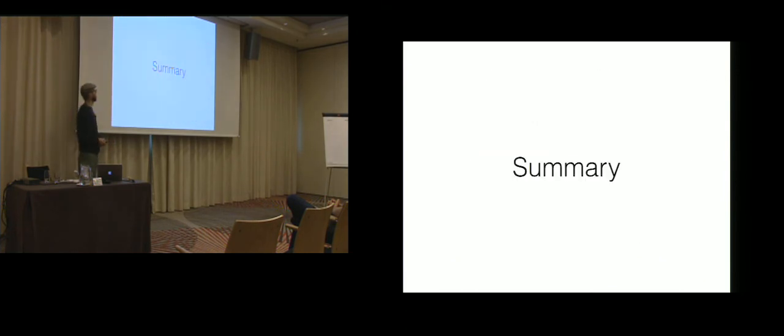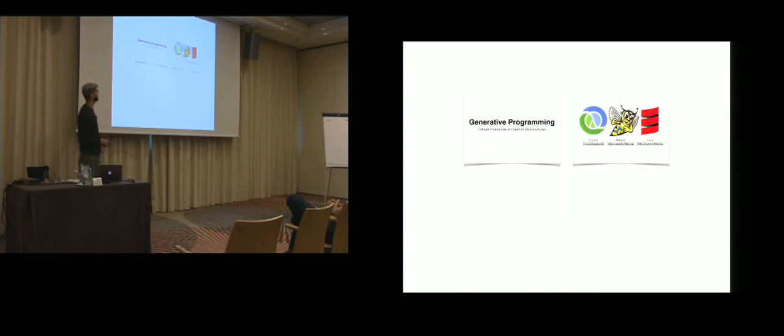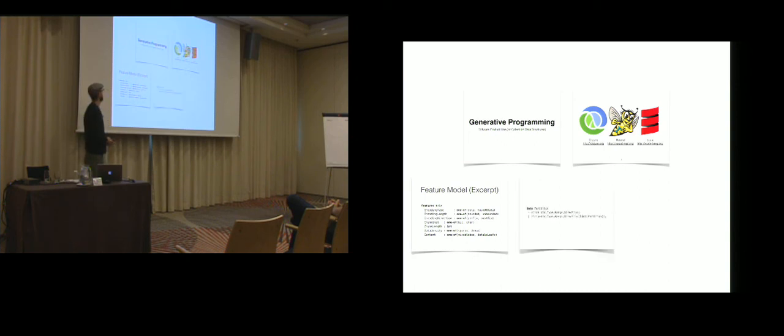With that, I would like to conclude and summarize. So this paper aimed to present a generative programming overview of how you can create a software product line for collections. Particularly, we aimed at trie-based collections that are an important cornerstone for efficient immutable data structures. As one important part, we devised a feature model that captures the variability within that domain. And we also devised a concise set of domain-specific abstractions to efficiently generate those.